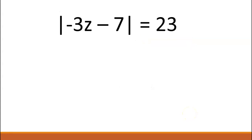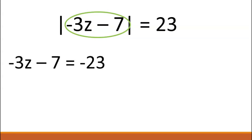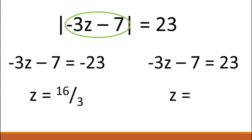You can then solve the equation using the same strategy as the previous example. Set the expression negative three z minus seven equal to both negative 23 and positive 23, then solve for z. Did you get sixteen thirds and negative ten? How can you check to see if your answers are correct?